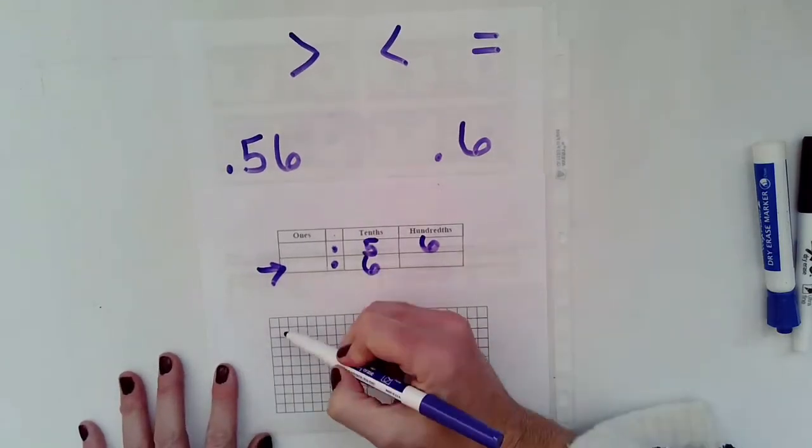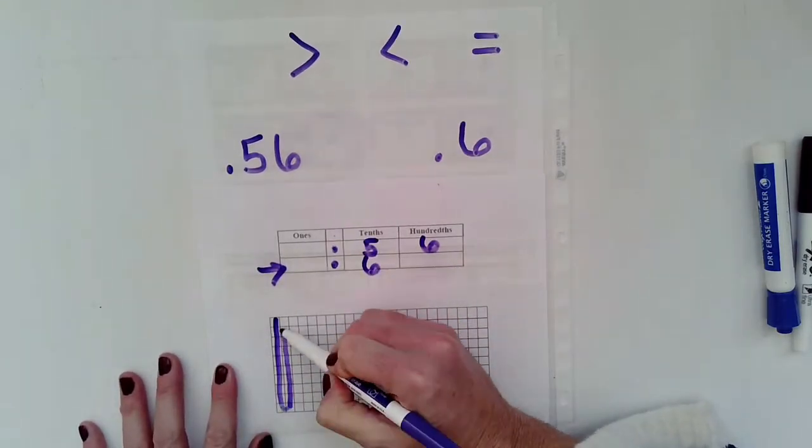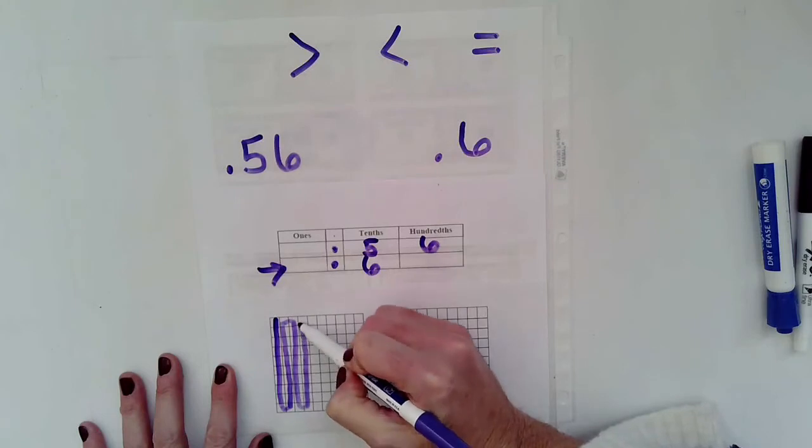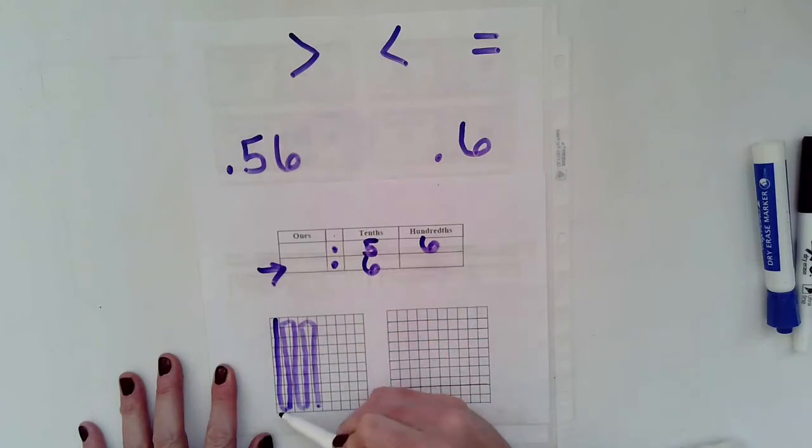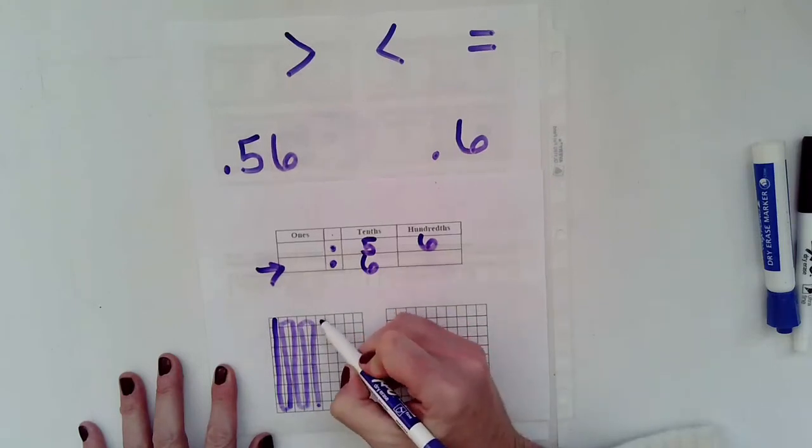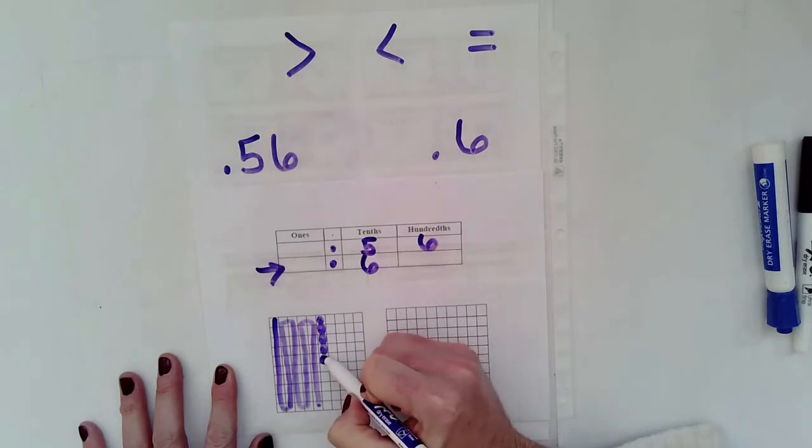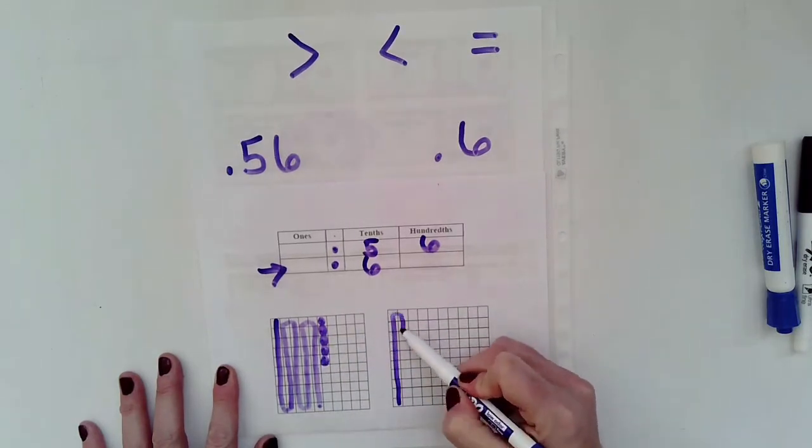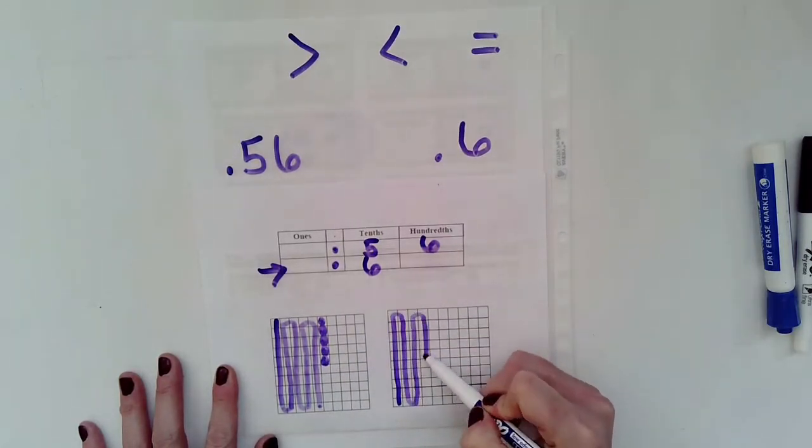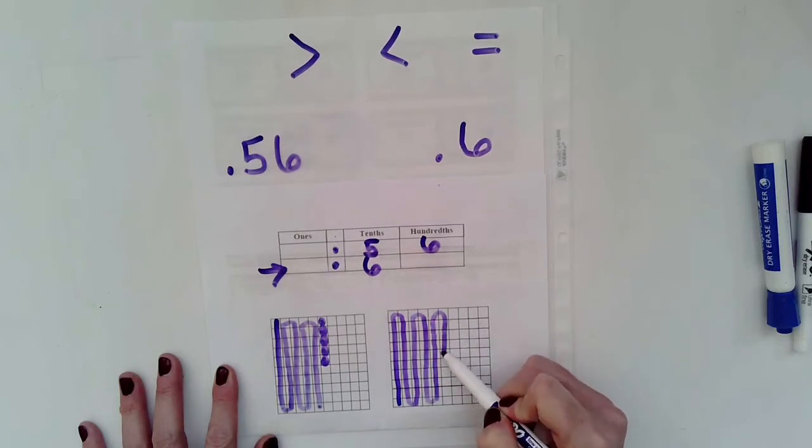And we can prove that over here by drawing it out. So, let's go ahead and draw out our 56 hundredths, 1, 2, 3, 4, 5. And then coloring in 6 tenths, 4, 5, 6.